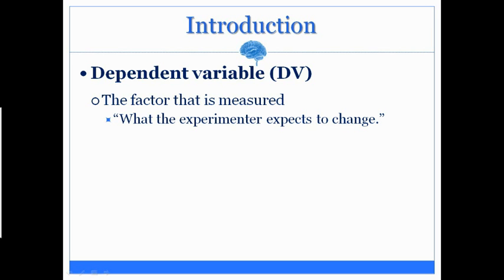In other words, this is the factor that they look at at the end to see if it changed. This is the factor that they expect to change as a result of the independent variable. There will be a further clarification of cause and effect in the next lecture, so if you wish to really understand the difference between independent variable and dependent variable and how those are incorporated into an experiment, please tune into that series of slides. But for now, a great working definition is that the dependent variable is the factor that is measured.